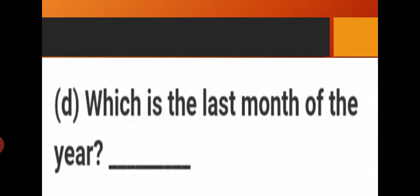Now question D: Which is the last month of the year? Start to say the names in sequence: January, February, March, April, May, June, July, August, September, October, November, December. In order: first January, second February, third March, fourth April, fifth May, sixth June, seventh July, eighth August, ninth September, tenth October.